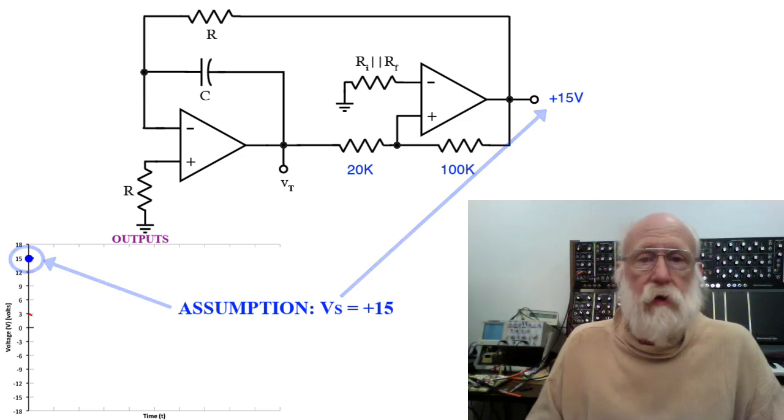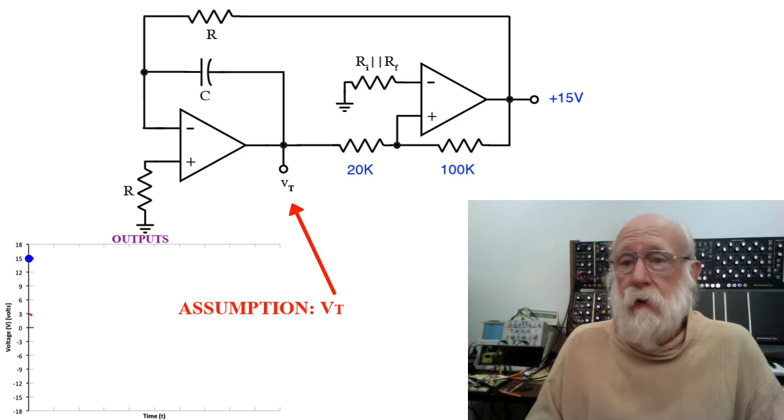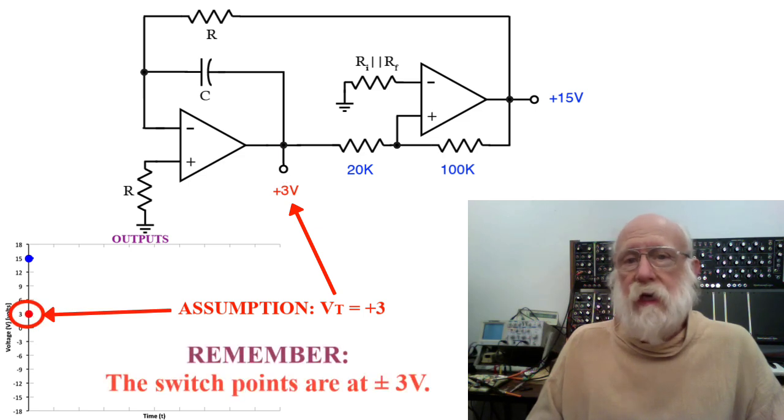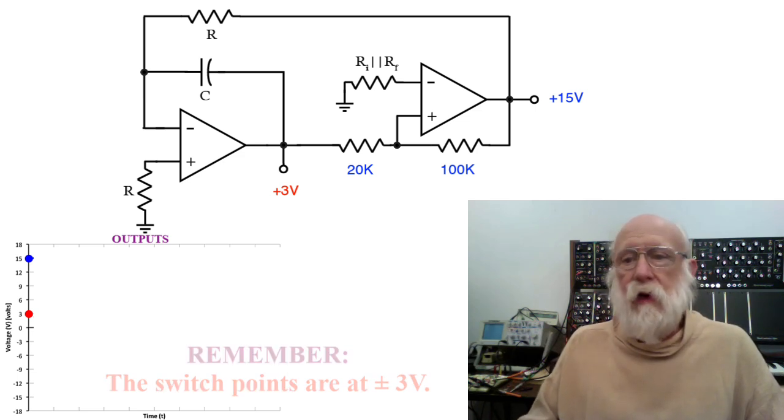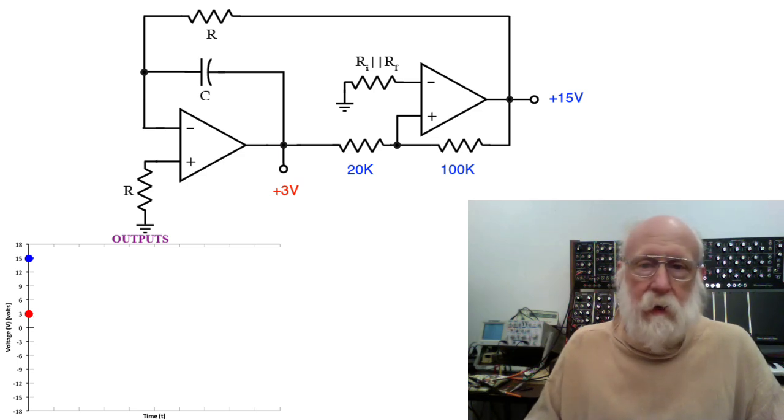We're also going to assume that V sub T, the input to the Schmidt trigger, or the output from the integrator, is at plus 3. That would imply that possibly that input has just reached plus 3, and it's just switched positive, although it could have gone above 3 and come back down to plus 3.